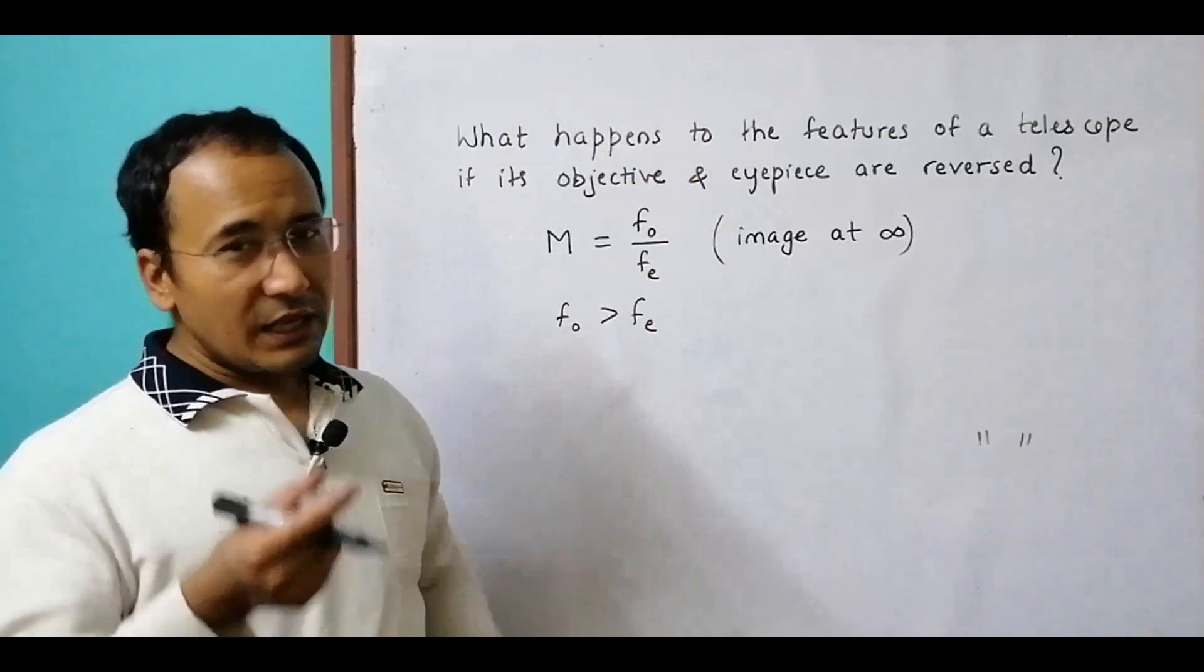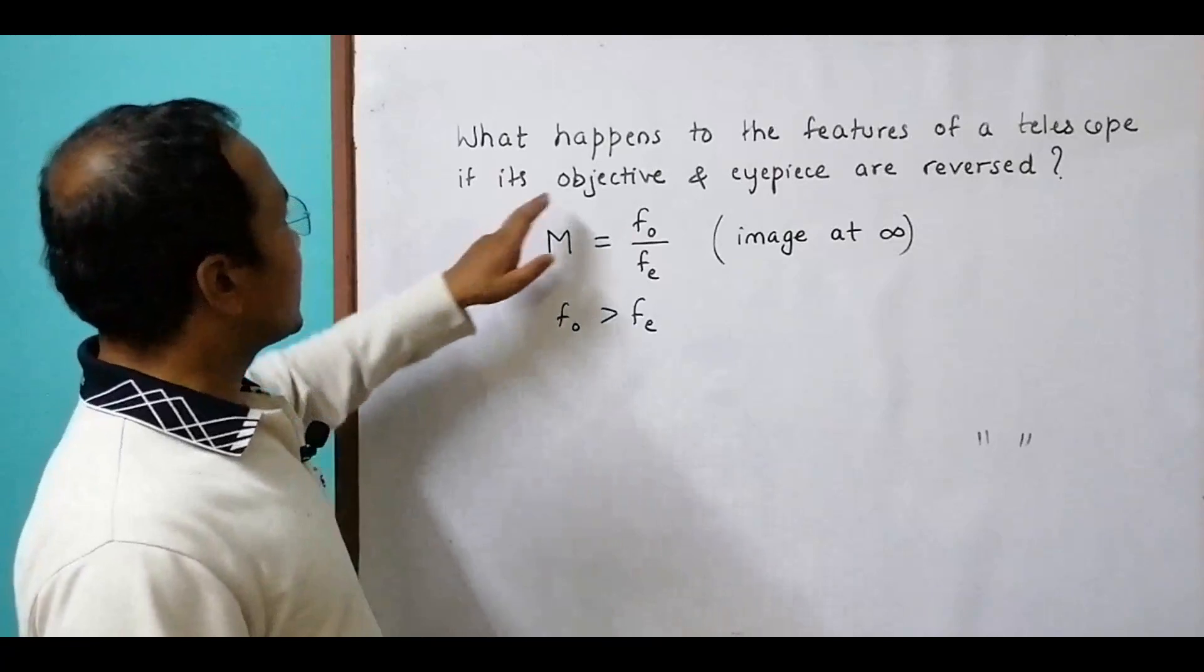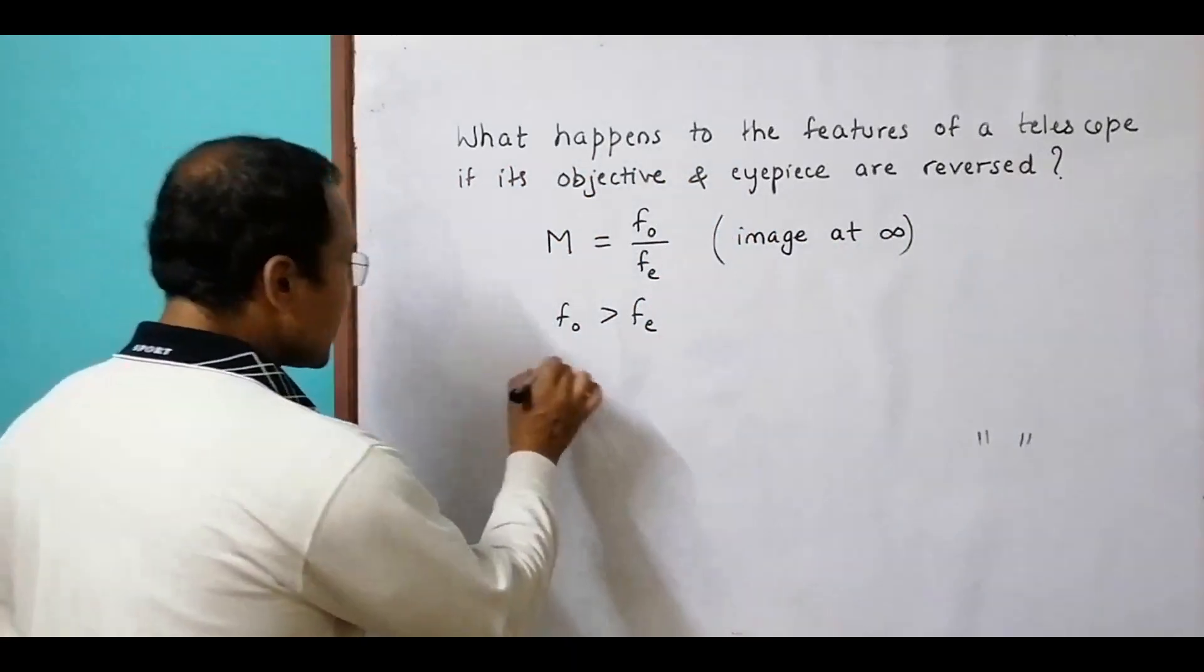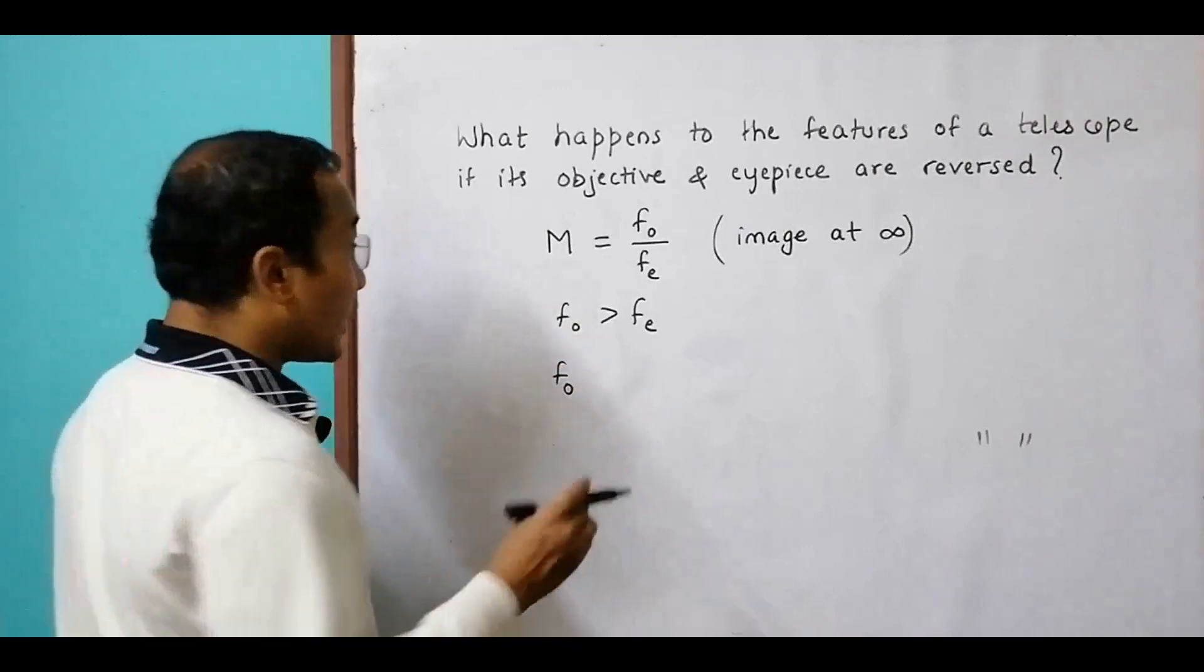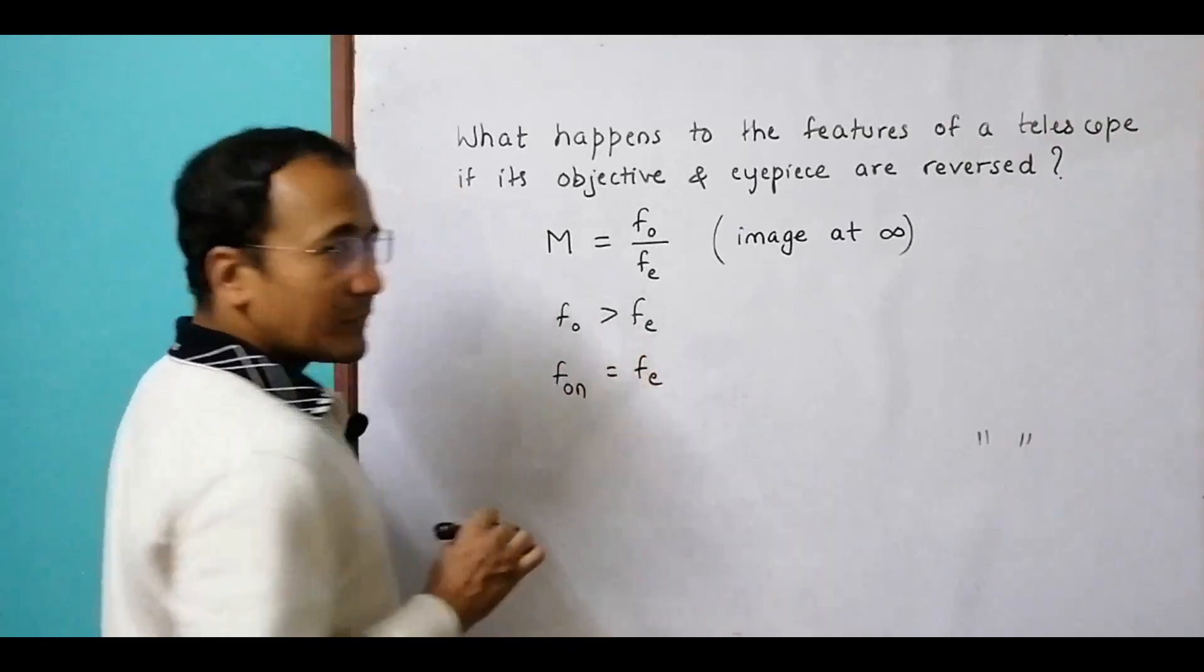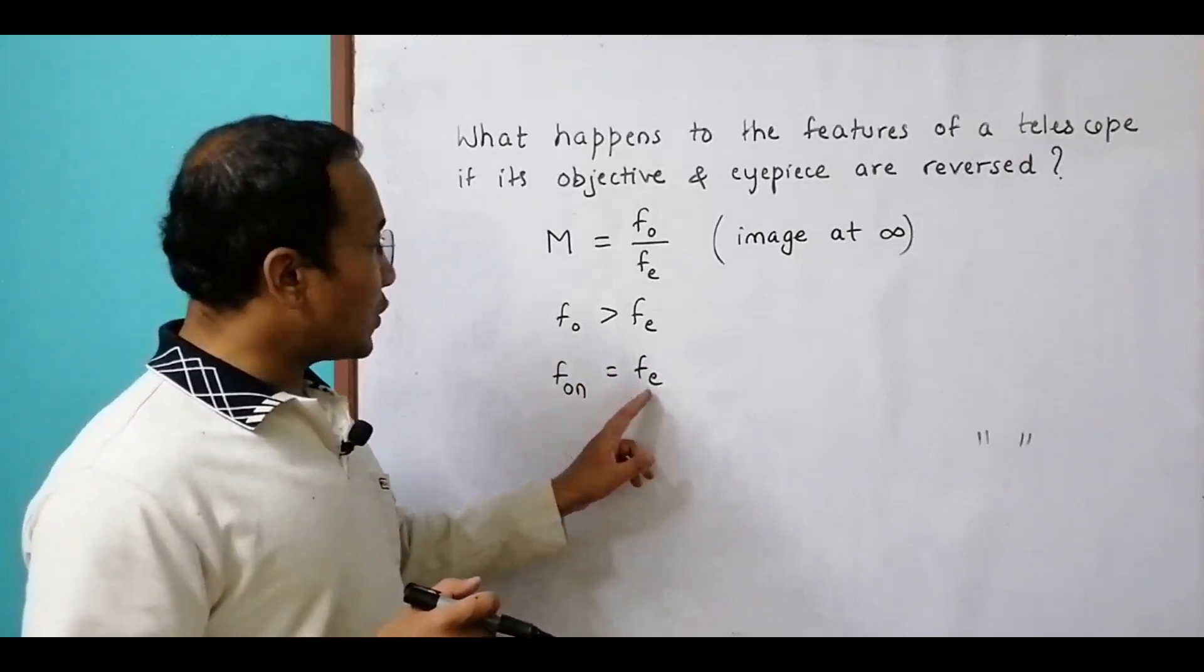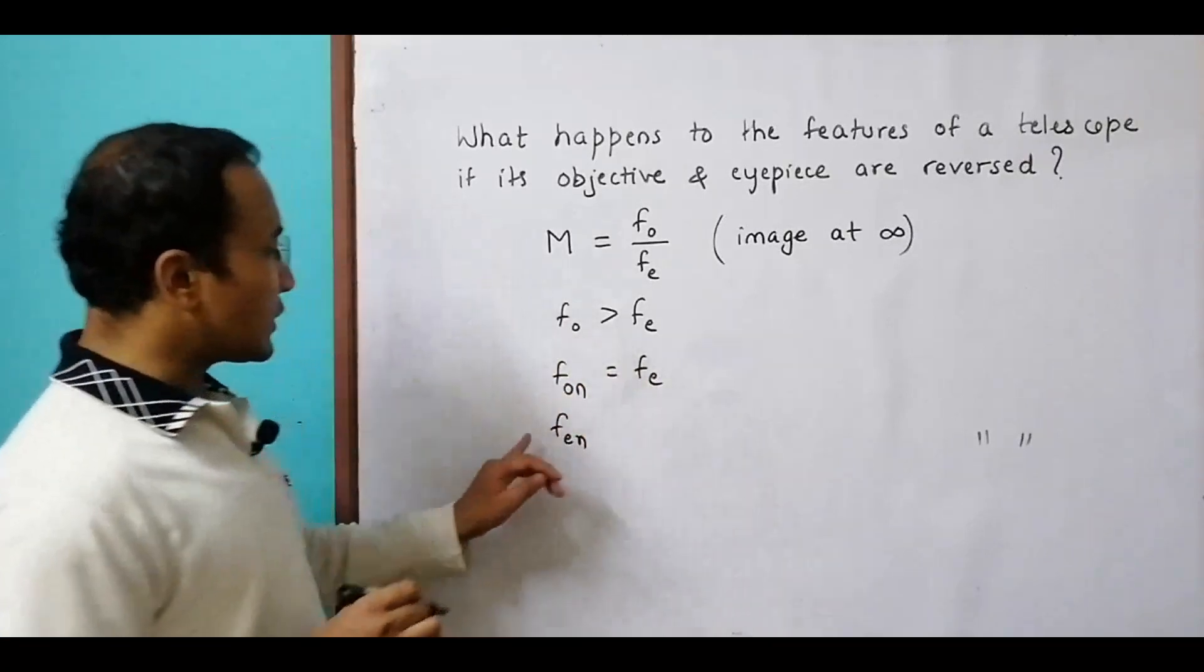Now if we reverse the objective and eyepiece, what happens? If I reverse like this, the new focal length of the objective becomes the old focal length of the eyepiece. So fo new equals fe old. The initial eyepiece becomes the new objective.